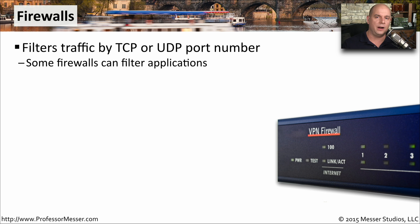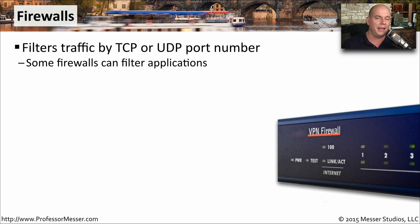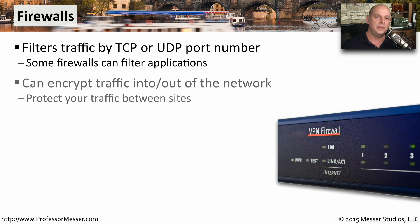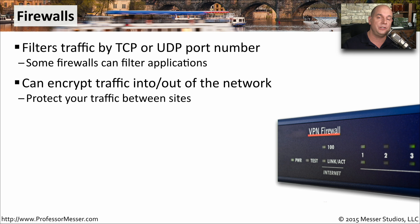Your network most certainly has a firewall connected to it, usually integrated into a wireless router or as a standalone firewall. These devices are responsible for filtering out traffic, and usually make those decisions based on a TCP or UDP port number. Some newer firewalls can make forwarding decisions based on the applications running over the network and decide whether to allow or disallow traffic based on the data inside the packets themselves. Many firewalls also have VPN functionality — the virtual private network — so they can encrypt information going into and out of your network, creating an encrypted tunnel between two sites.